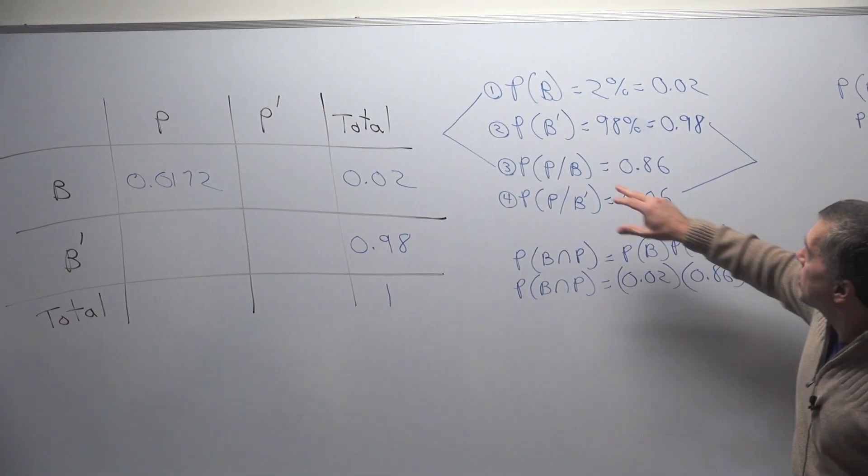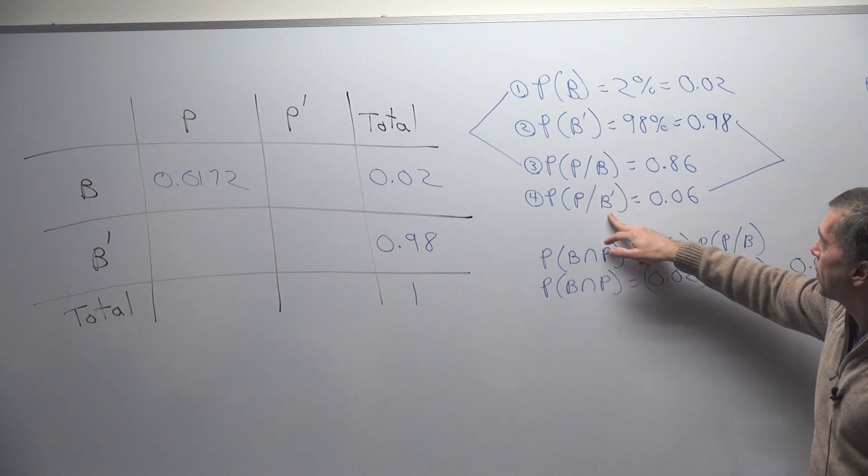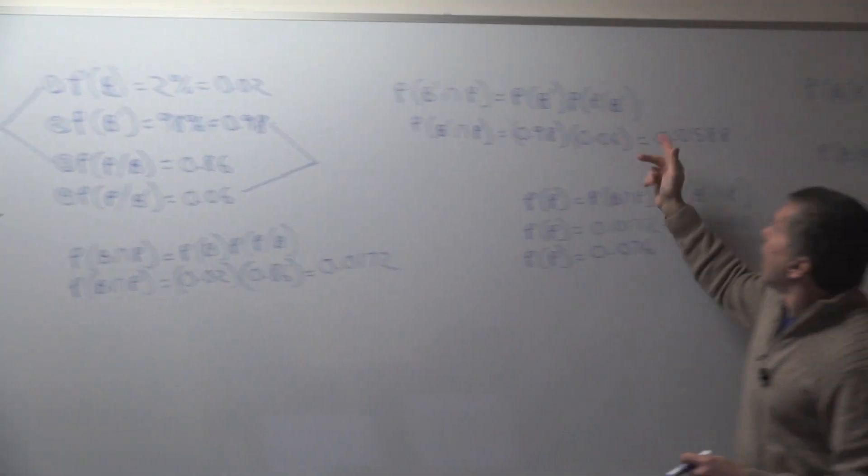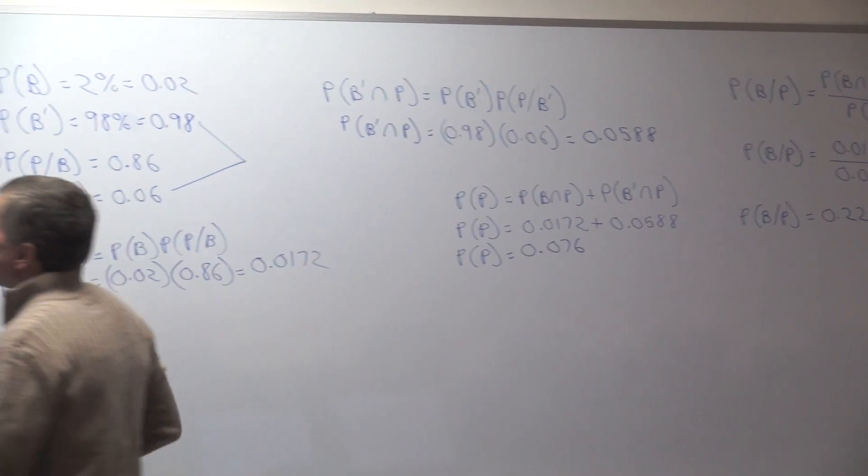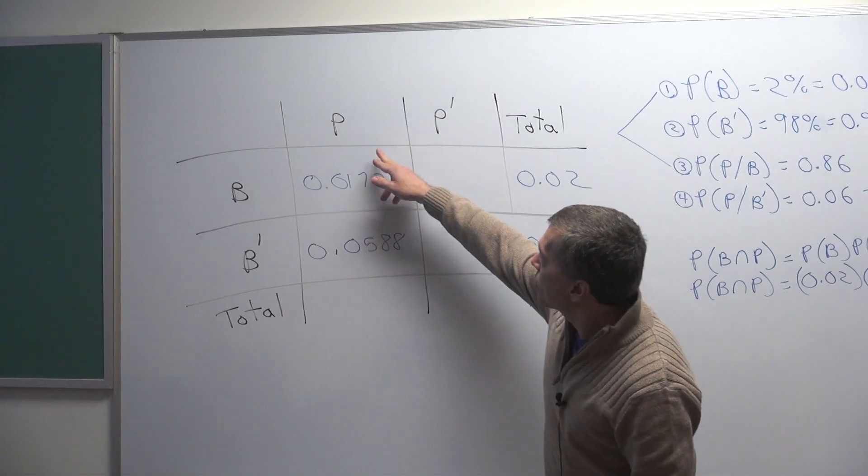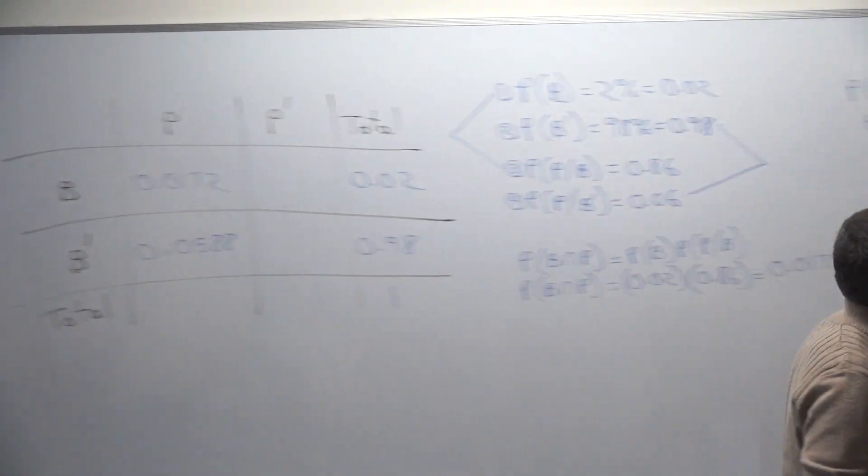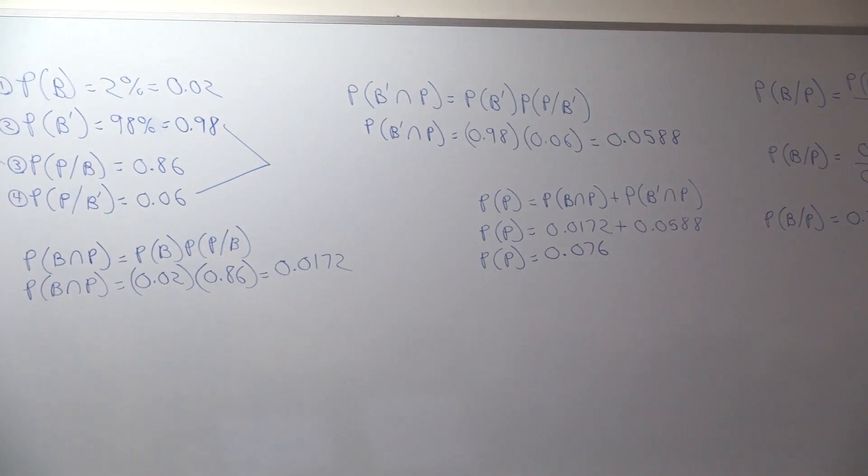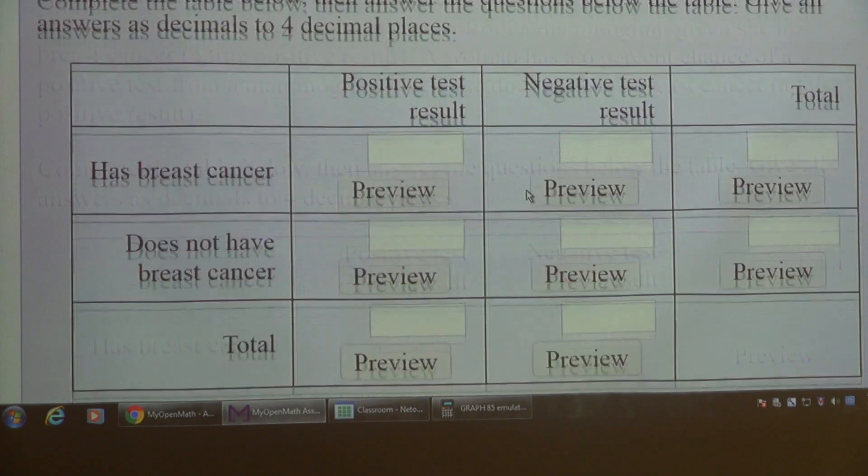Now using these two right here, the probability of not having breast cancer and the probability of a positive result given not breast cancer, if we multiply these two together I can get the probability of not breast cancer and a positive result. So multiply these two together and you get this answer right here, 0.0588. Now you can get the probability of a positive result then by adding these two together. If you add those two together you'll get 0.076. Now we can fill in some of the blanks on this problem.